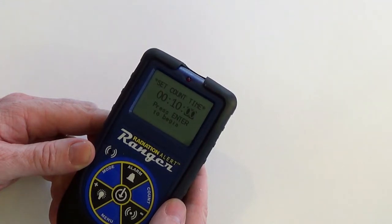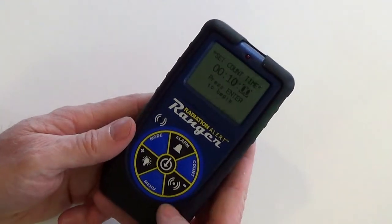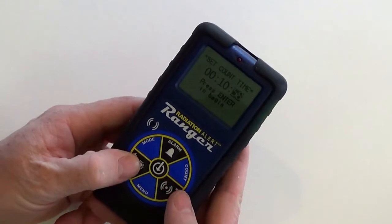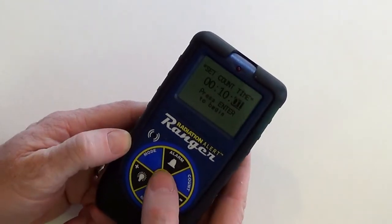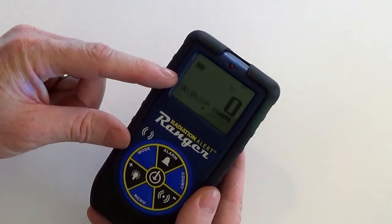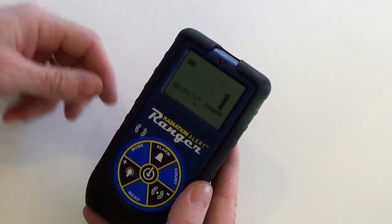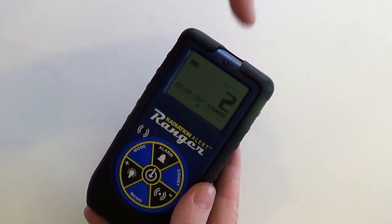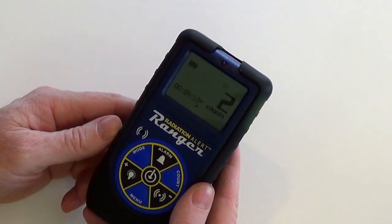To perform a timed count, press the count button. This will take you to the set count time screen. Use the plus and minus buttons to set your desired count time, and then press enter to begin your timed count. The countdown will appear in the lower left-hand portion of the LCD, and a flashing hourglass icon will appear at the top of the display.